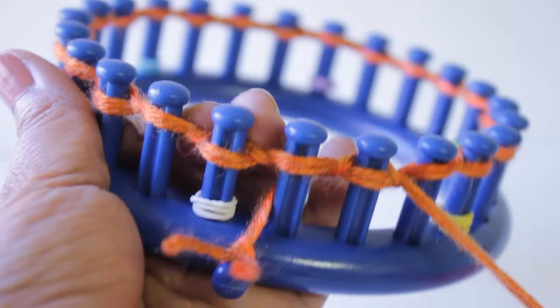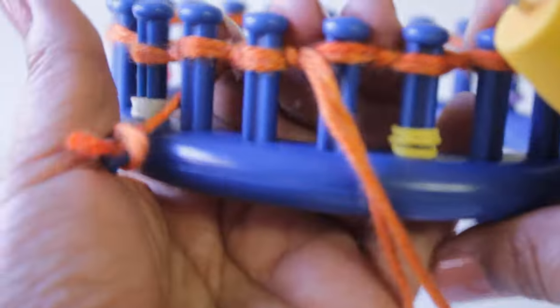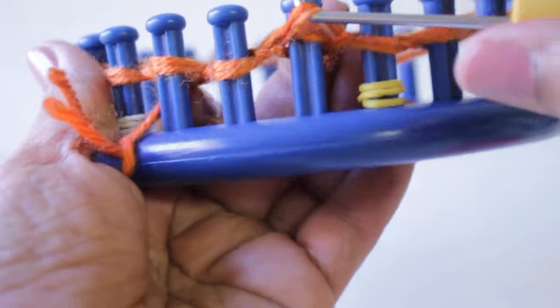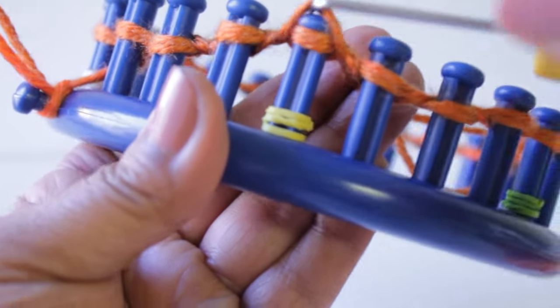And then you're going to your next peg. You're gonna do the same thing. You're going to half wrap the peg and knit off. Now just continue, you need to knit all of your pegs.